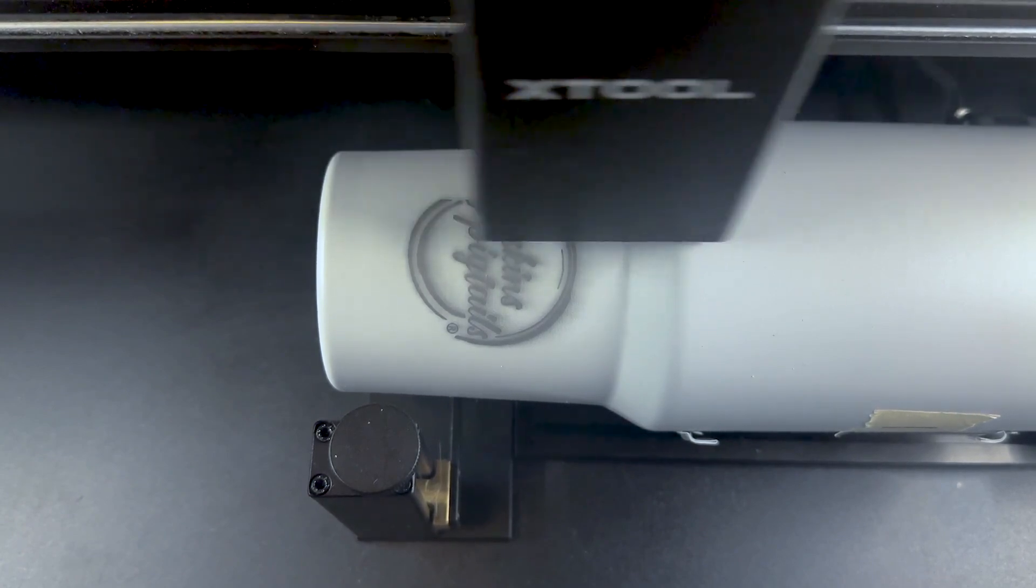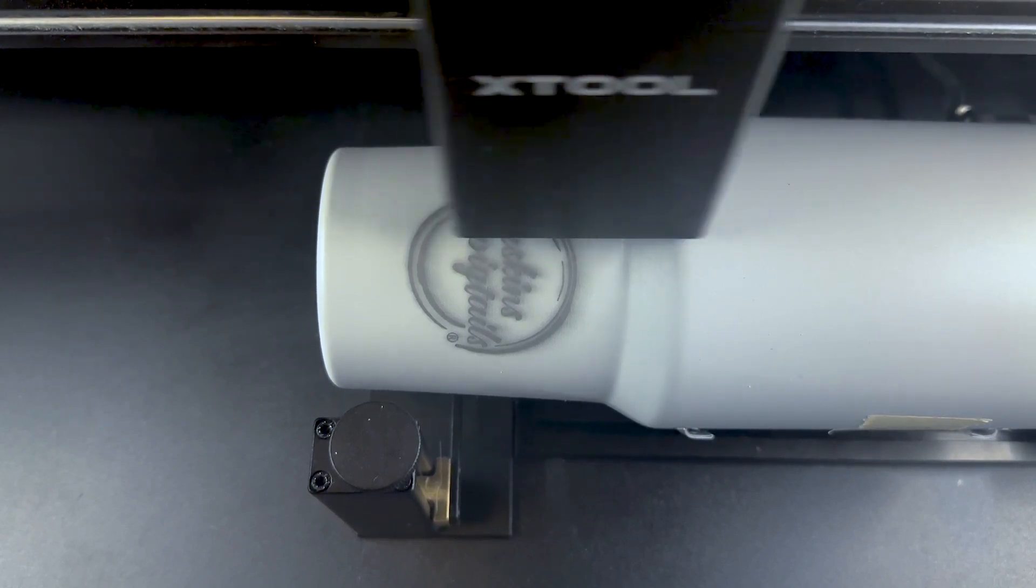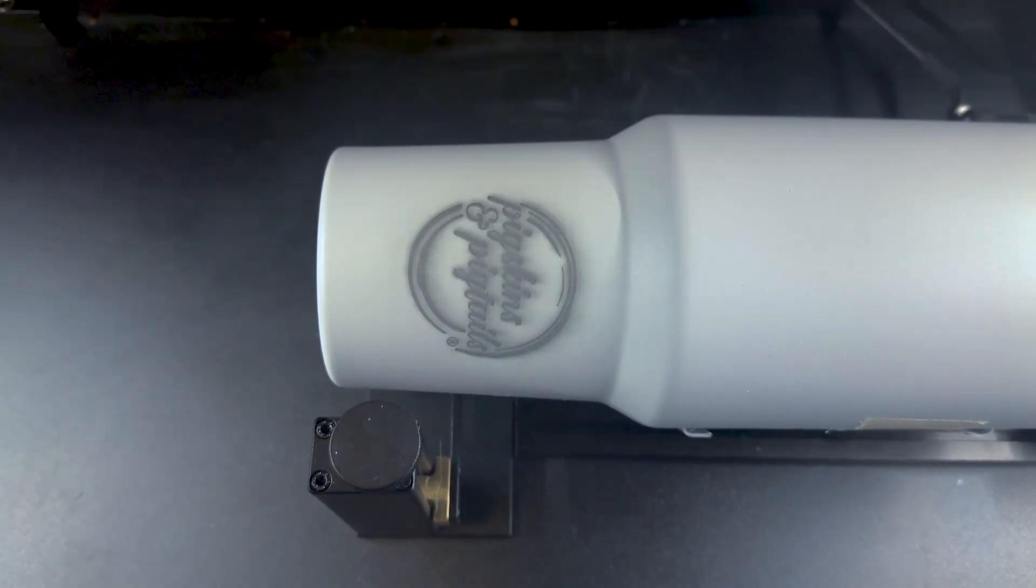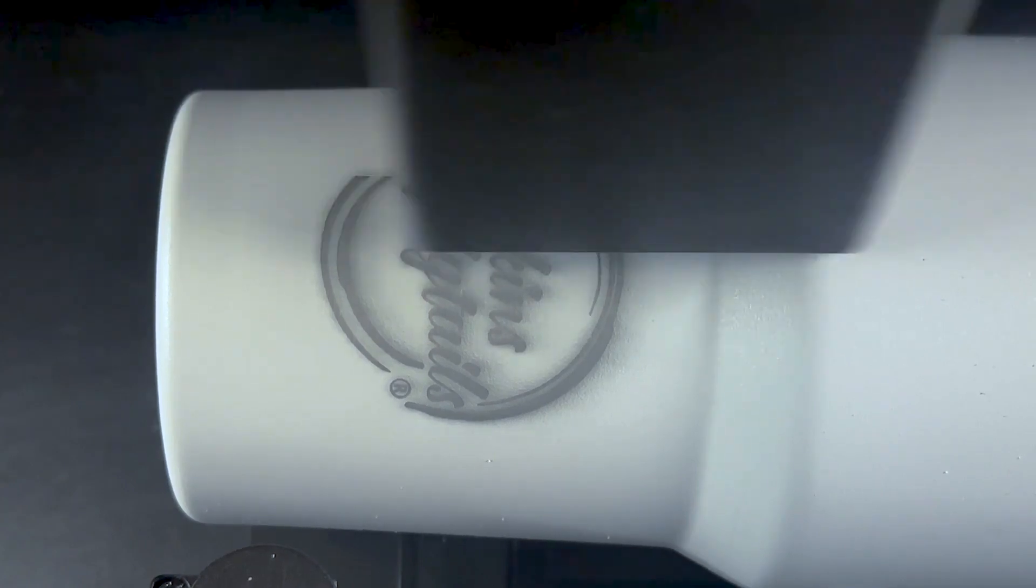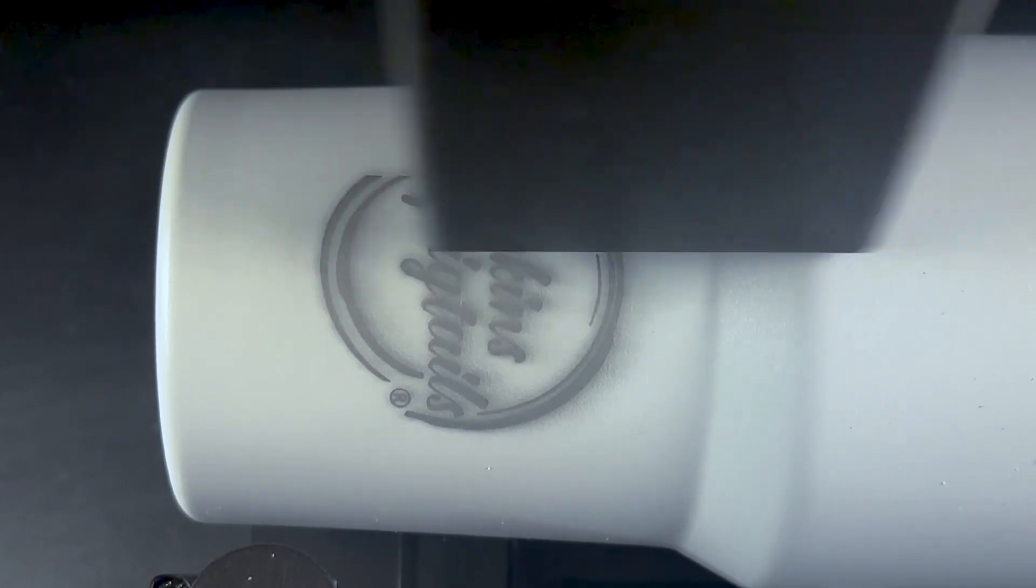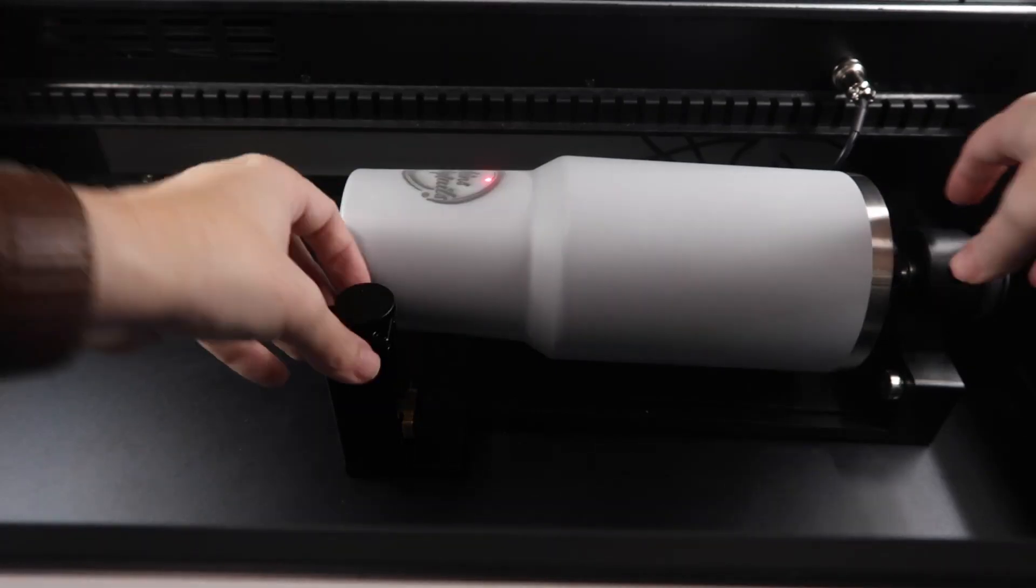Depending on what you're engraving here, this distortion may not be as noticeable for you. Because my logo is round, just a little bit of distortion is really noticeable. Once that's done, I spin the cup around and line up the other side and process it one more time with the same settings. This logo takes less than three minutes to engrave on each side. With the bottom part done, now we need to move the tumbler before starting the top part.